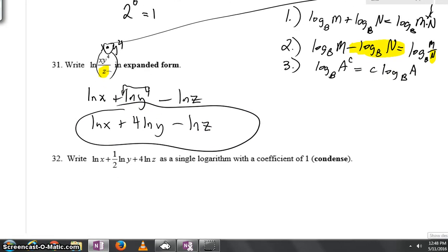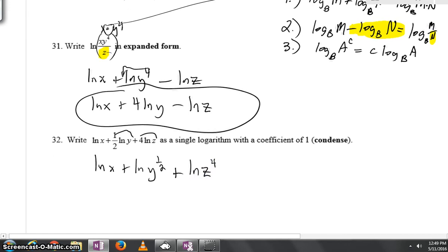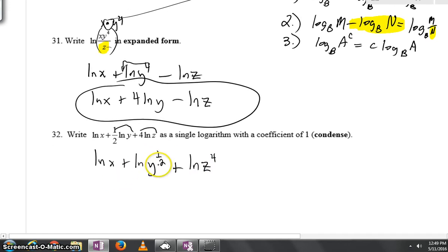As we look at number 32, take that 1 half and bump it up. This will become natural log of Y to the 1 half. Take that 4 and bump it up. We'll have Z to the 4th. And by the way, just to let you know, this Y to the 1 half is really the square root of Y.